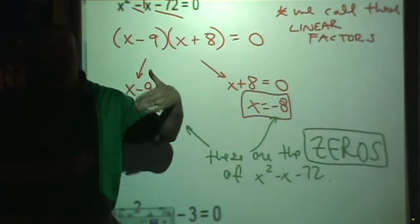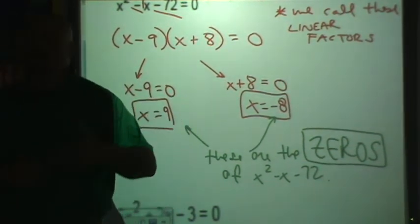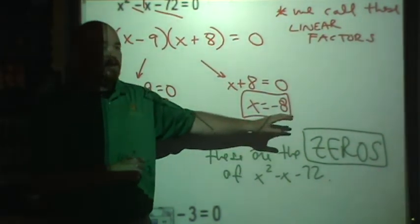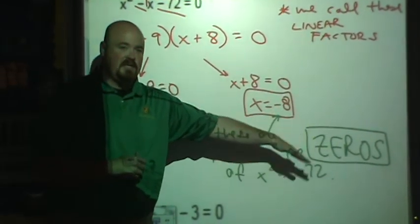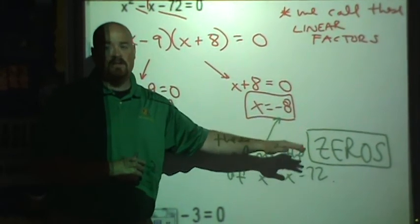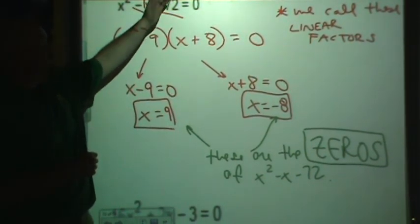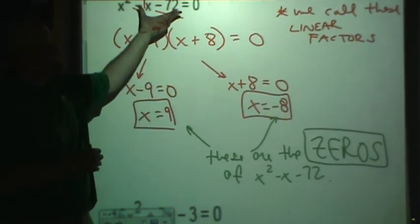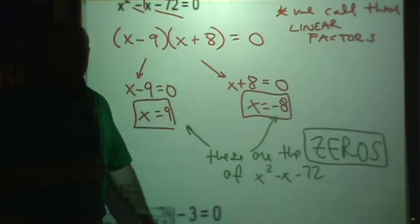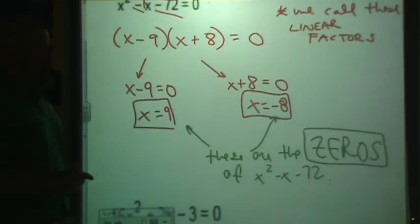This gets covered in Algebra 2 honors. We don't have a ton of time, but I wanted to make sure you had exposure to this. The solutions are called zeros, and they are called zeros because they make the equation equal to zero. They fit into this equation when it is set equal to zero.